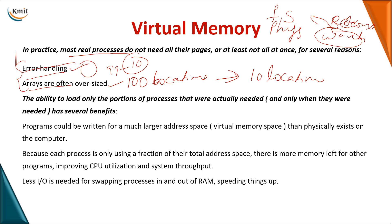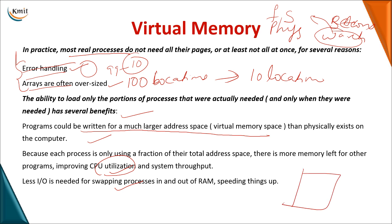The benefits of virtual memory: programs larger than your actual physical memory size can be executed. CPU utilization will also be higher and less input/output swapping of processes is required. With a physical memory of 1MB, instead of loading one 1MB program you can divide it so half holds part of program 1 and the other half holds part of program 2, meaning two programs are present simultaneously and system throughput can also be increased.